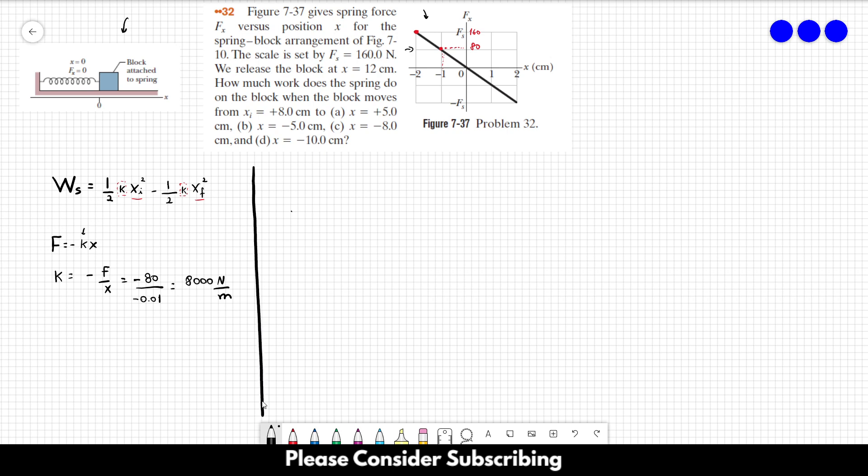So now that we have the spring constant, that's trivial. Let's go for letter A. The work is equal to, let's simplify this equation first, so it's 1 over 2k, xi squared minus xf squared.